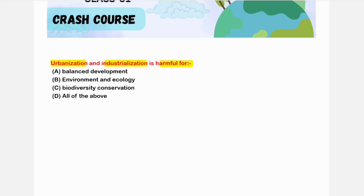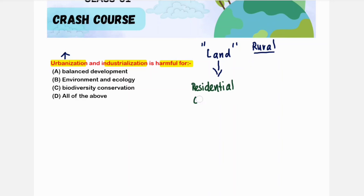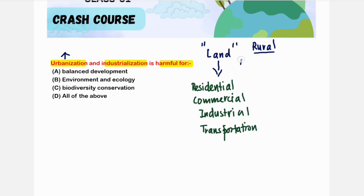The first question is about urbanization and industrialization being harmful. Urbanization means the transformation of land from its natural form — for example, agricultural land in rural areas — into residential, commercial, industrial, and transportation purposes.